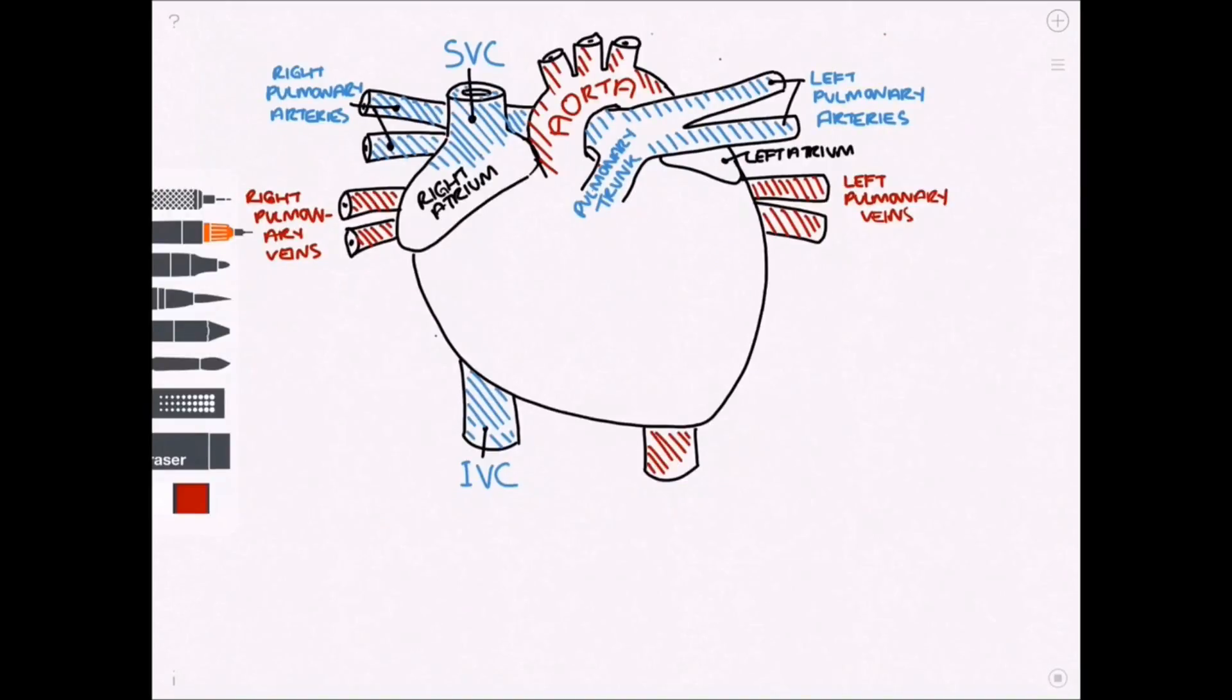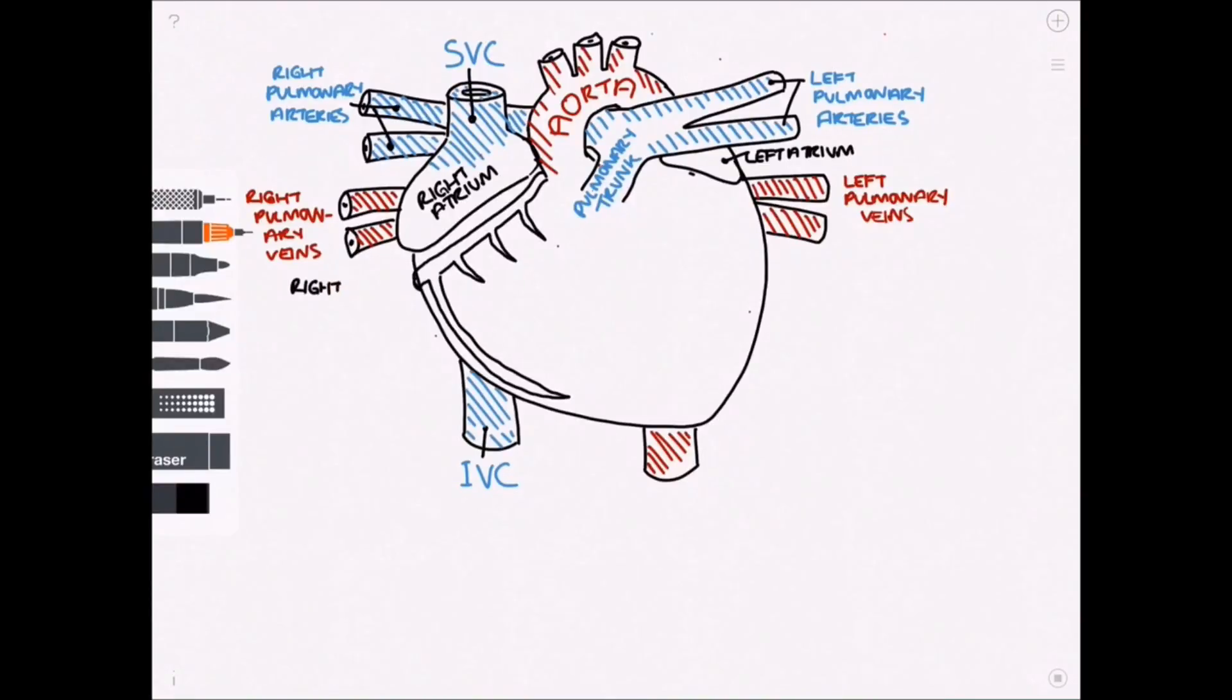So that's the aorta going below the heart. Now I'm drawing on the coronary arteries. So this side we've got the right coronary artery coming out of the base of the aorta.